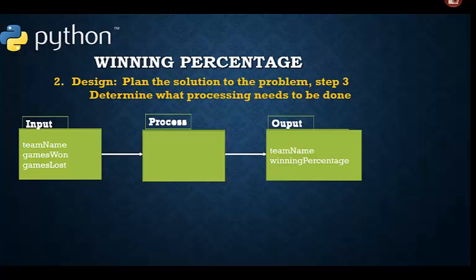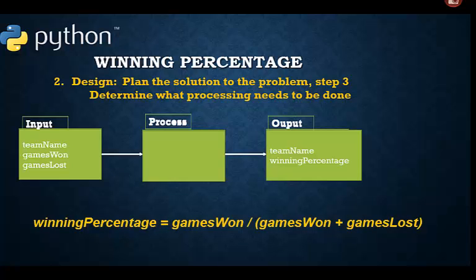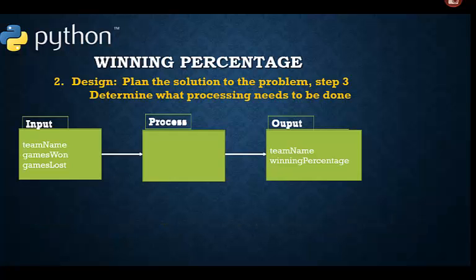Here is the formula for our winning percentage calculation. Winning percentage equals games won divided by paren games won plus games lost n paren. Note that we need a set of parentheses here so that the addition is done before the division. Now that should work given that there are no ties.